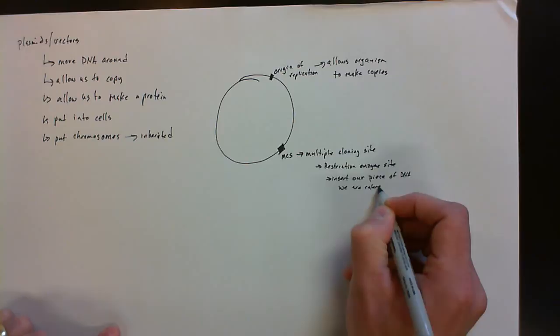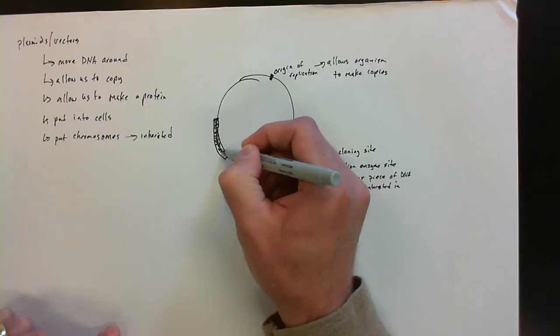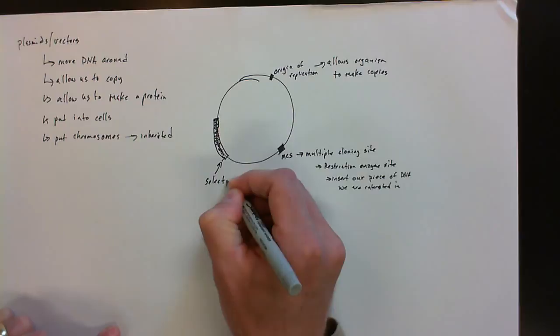Now, to make our lives easier, they will also have a selection gene. So in terms of putting this into bacteria, this will be an antibiotic-resistant gene.